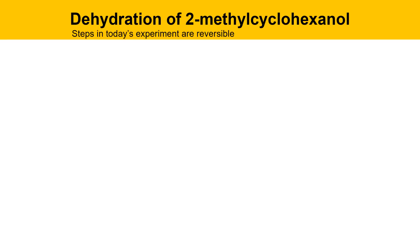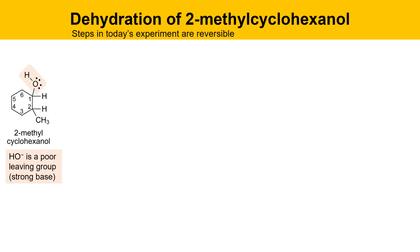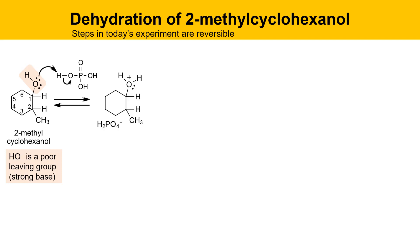Today's experiment involves the dehydration of 2-methyl cyclohexanol, and the steps are reversible. The reaction starts with 2-methyl cyclohexanol — the OH group is on the one position and the methyl group is in the two position. OH groups are poor leaving groups because hydroxide is a strong base. This molecule won't undergo substitution or elimination on its own, but with phosphoric acid, the acid can protonate the OH group and generate a protonated version with a good leaving group because it's a weak base.